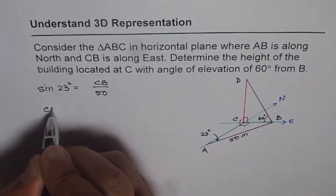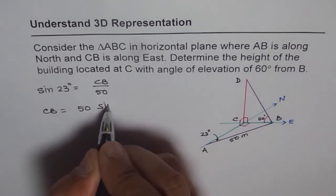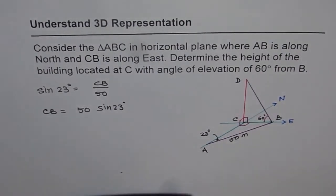From here, we know CB is equal to 50 times sine of 23 degrees. So we can use calculator to find our answer. This is 50 times sine of 23, which is equal to 19.536.